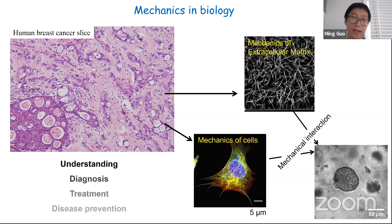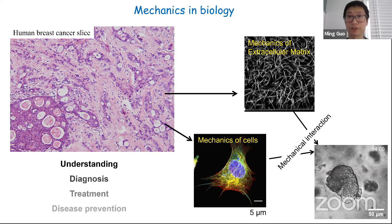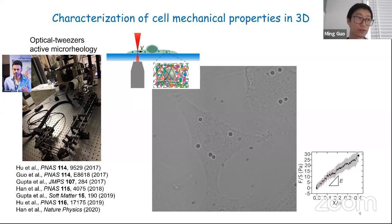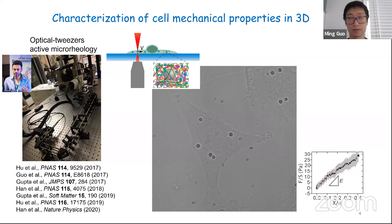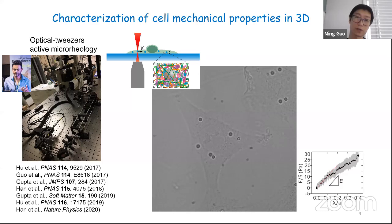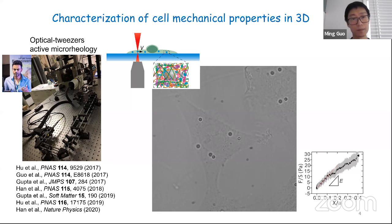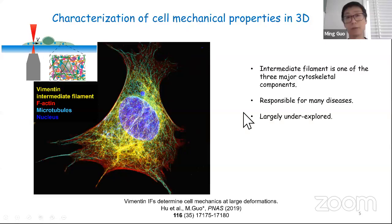Today I'll quickly go over a few projects in my group that each have some relevance to cell migration. The main tool we use is optical tweezers. In this video you can see us using optical tweezers to manipulate a particle taken up by the cell — the particle is trapped by a laser beam and dragged to the right, allowing us to measure the force-displacement curve as we use the particle to deform the cell, measuring mechanical properties such as elasticity and plasticity.